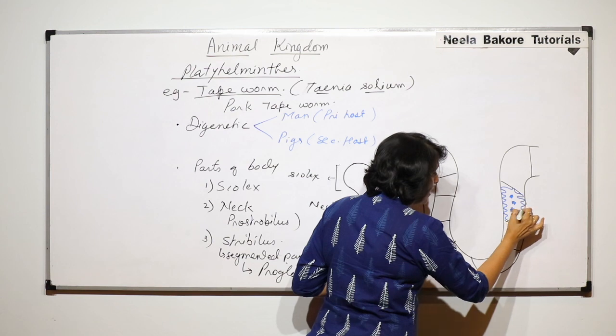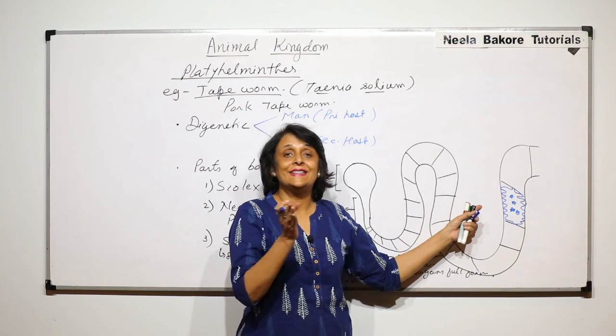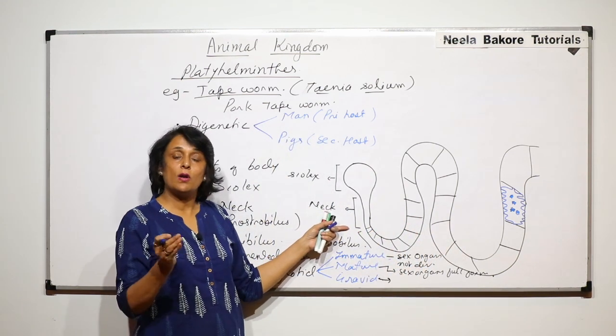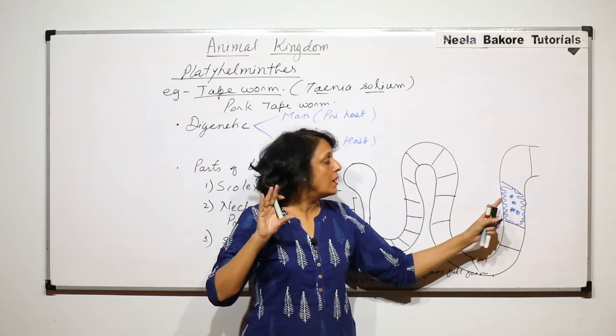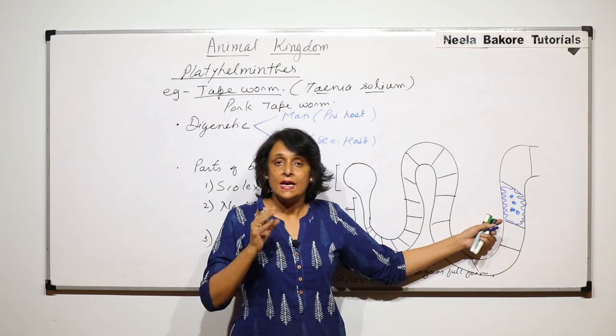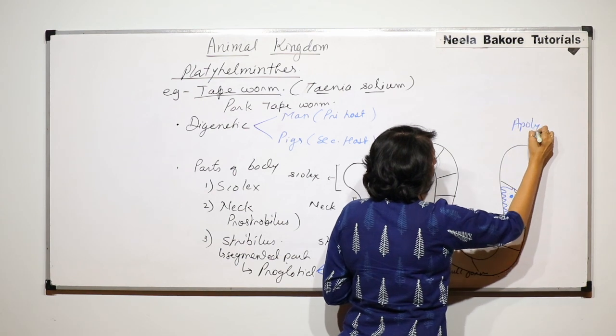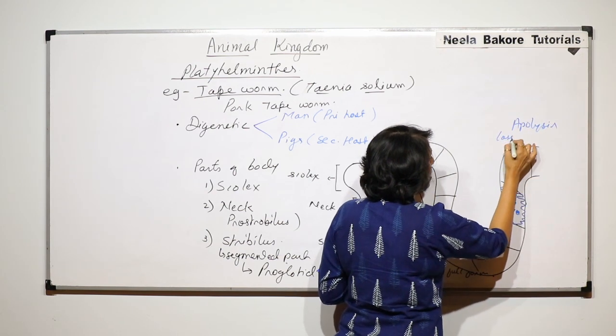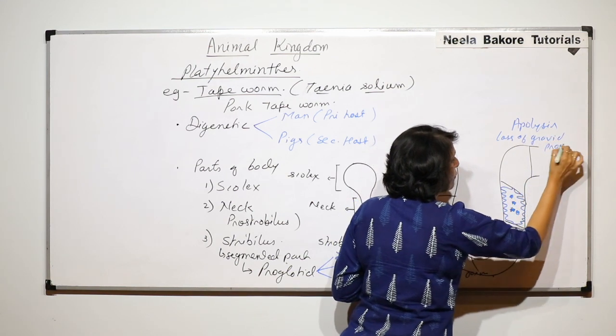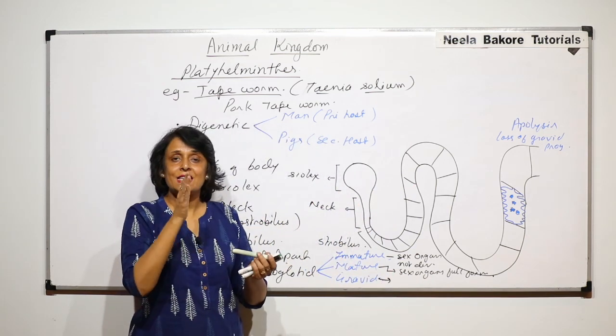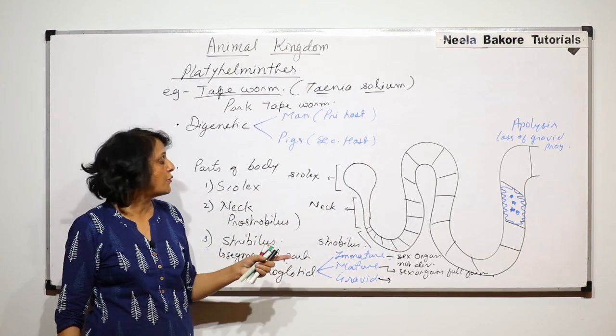From the last part these gravid proglotids will be continuously detached. So from the neck region new proglotids will be formed and from the last part the mature gravid proglotids where there are only cysts they will continuously detach. This detachment is known as apolysis. Apolysis is loss of gravid proglotids from the last part. New ones will be formed here and the last ones will detach from here.